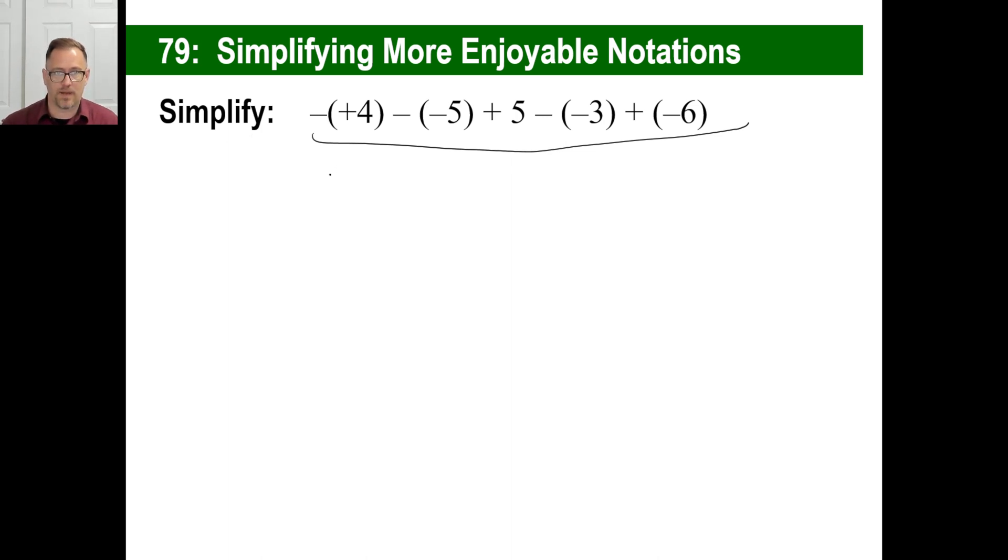This is what I would do. Ready? Okay. So this I'd go, okay, this is the opposite of +4. That'll be -4. And this is the opposite of -5. That's going to be +5. Then +5, just +5. Okay. Then the opposite of -3 will be +3. And then we're going to add a -6. That's, oh, there's an odd number of negatives. That's going to be a minus. And boom, there we go. That's it.